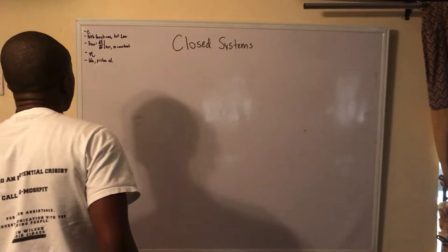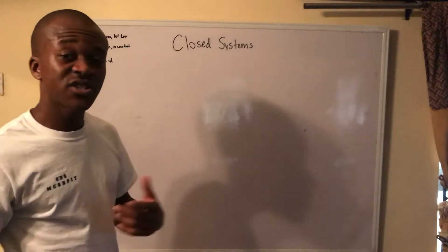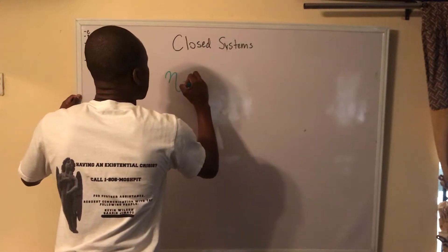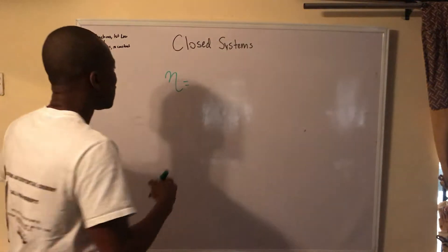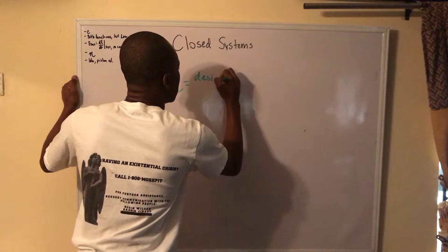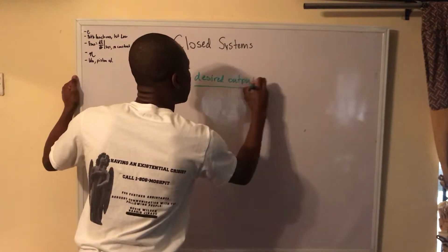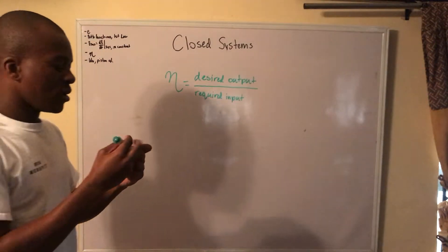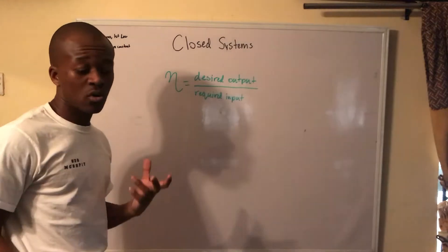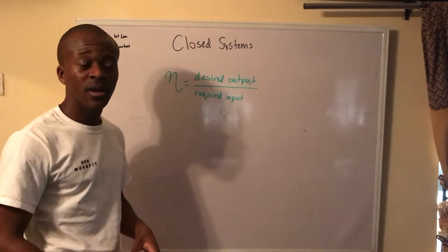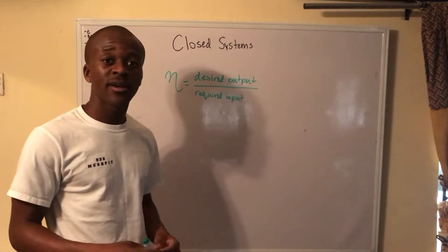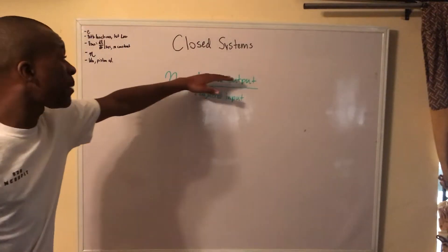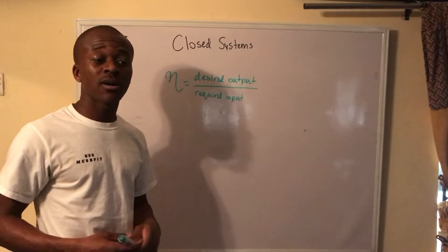Next, let's talk about efficiency. Efficiency is how well something gets its job done. In thermodynamics, we denote efficiency with the Greek letter eta (η), and efficiency is simply given by desired output over required input. Interestingly, if I give an assignment to determine the efficiency of a device, everyone in the room might get a different answer — and they could all be correct. That's because of the 'desired output' part.